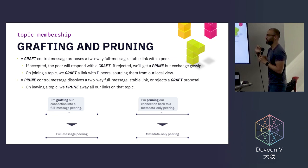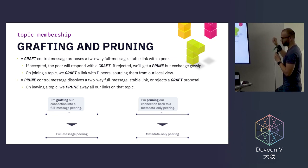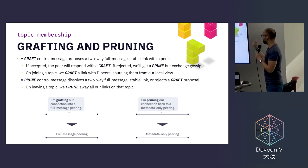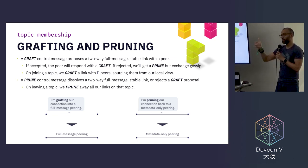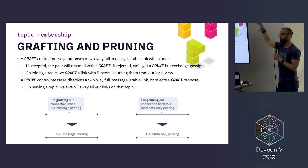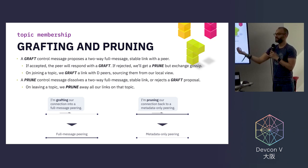There are two key concepts for topic membership: grafting and pruning. The stable mesh is self-regulating, and these two messages are key to regulating it. A graft control message proposes a two-way, full-message stable link with a peer — when a peer sends a graft, it's telling the other peer: 'I want to be part of your reciprocal mesh for this topic, I'm going to send you messages and you promise to send messages back.' The other peer can reject that if they're already beyond their target degree, sending back a prune. However, even if rejected from the stable mesh, the peer knows about the subscription and will still send metadata.